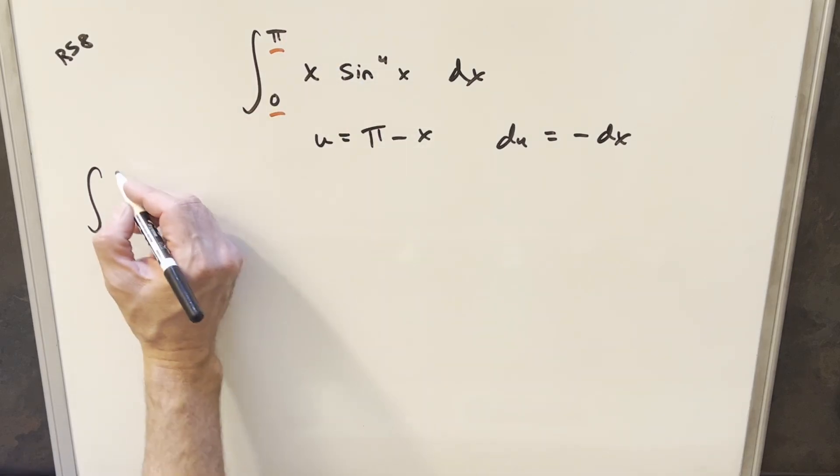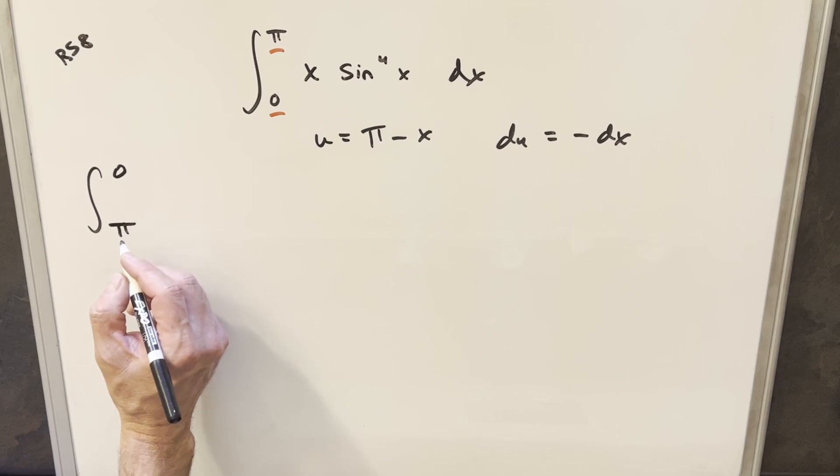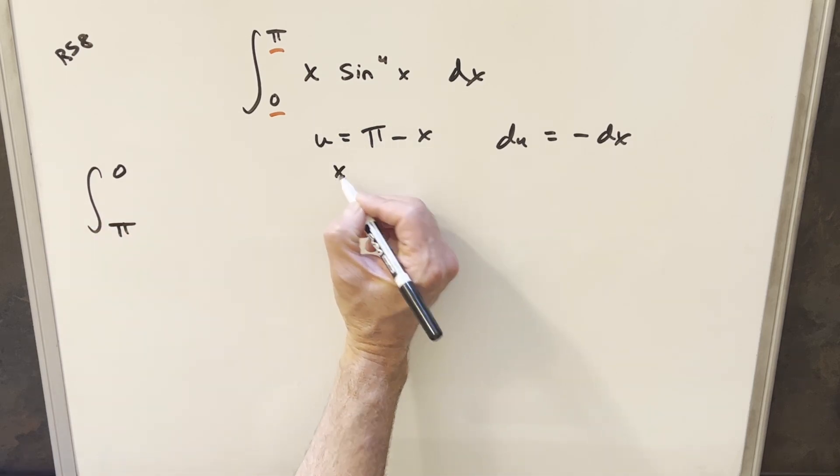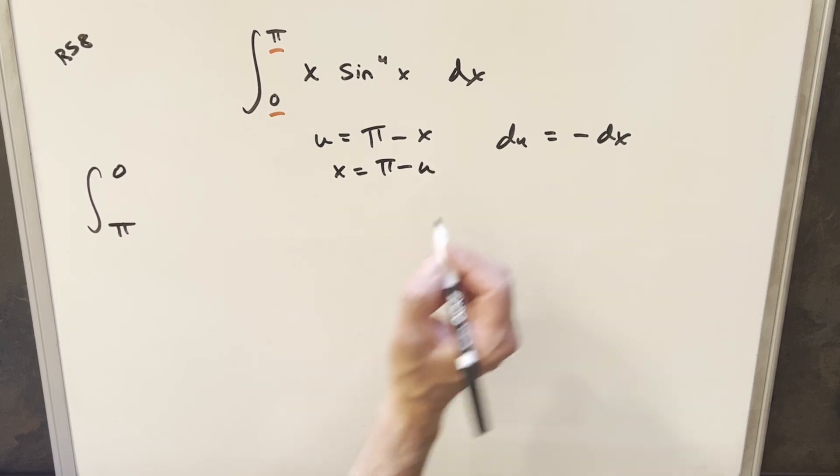What we get when we plug pi in here, we'll have a zero for our upper bound. Plugging the zero in, we get pi, so we flipped our bounds. Then for x, I should get an x value real quick, so we can just rearrange this, and we can find that x is equal to pi minus u.